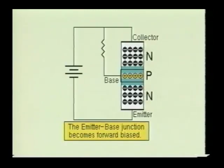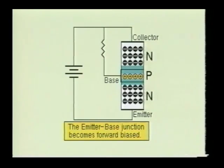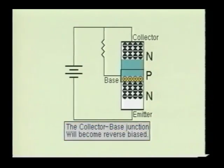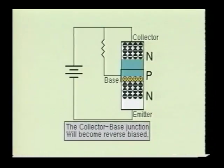When the transistor is biased properly, the emitter base section will be forward biased. This causes the emitter base junction to have a much narrower depletion region. The collector base junction, on the other hand, will become reverse biased, which will widen its depletion region. Since the base section is lightly doped and the collector section is heavily doped, the collector base depletion region will extend deep into the base area.